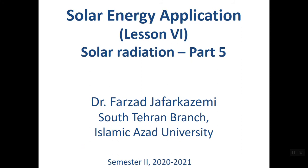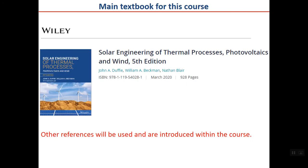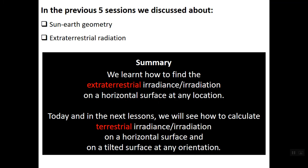Hi everybody, this is lesson six of Solar Energy Applications. We are still in the solar radiation part — this is part five of solar radiation. The textbook for this course is mainly 'Solar Engineering of Thermal Processes.' In the previous five sessions we discussed sun-air geometry and extraterrestrial radiation, and we learned how to find the extraterrestrial irradiance and irradiation on a horizontal surface at any location.